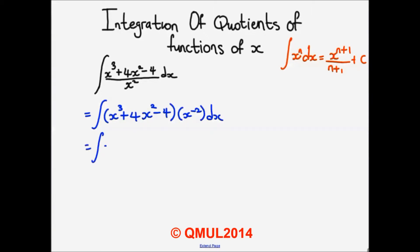Multiplying through, we get x raised to the power of 1 plus 4, minus 4x raised to the power of minus 2, dx.